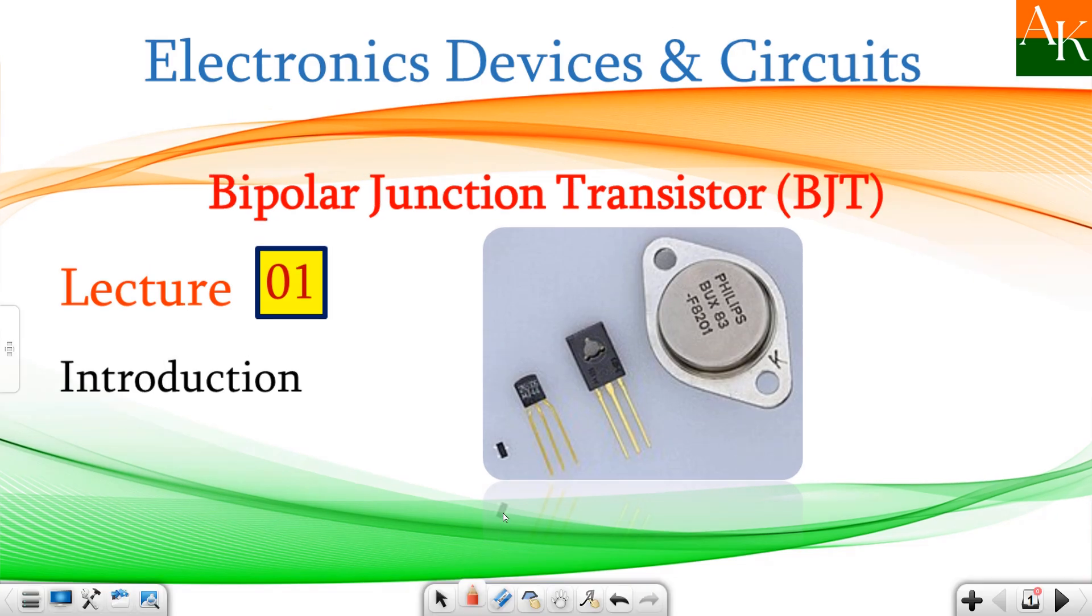Hello students, in this lecture we will see the basic of bipolar junction transistor and acronym for bipolar junction transistor is BJT. Why the name bipolar? Because here there are two types of charge carriers, one is electron and another one is hole. Deficiency of electron is known as hole.